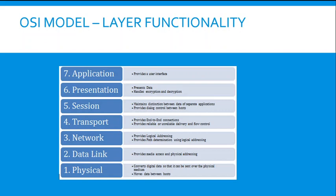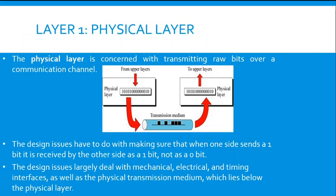On the second layer, the Data Link layer provides media access and physical addressing. The Physical layer, which is really important, converts digital data so it can be sent over the physical medium between different hosts. It is concerned with transmitting raw bits over the transmission medium. Design issues deal with ensuring that when one side sends a 1 bit, it is received as a 1 bit — not a 0 bit — involving mechanical, electrical, and timing interfaces.